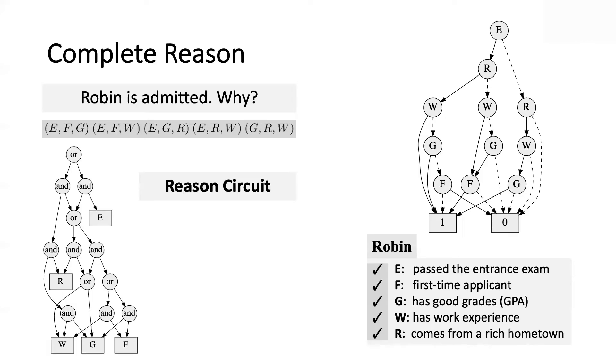But instead, what we will do is we will get the reason circuit for that decision, which is a circuit, as I mentioned, that happens to be equivalent to the disjunction of all of these. And then we're going to use that to determine bias and other queries that I'm going to mention later. The interesting thing is that this reason circuit can be obtained in linear time from the classifier and an instance, assuming that the classifier is represented in a particular form.